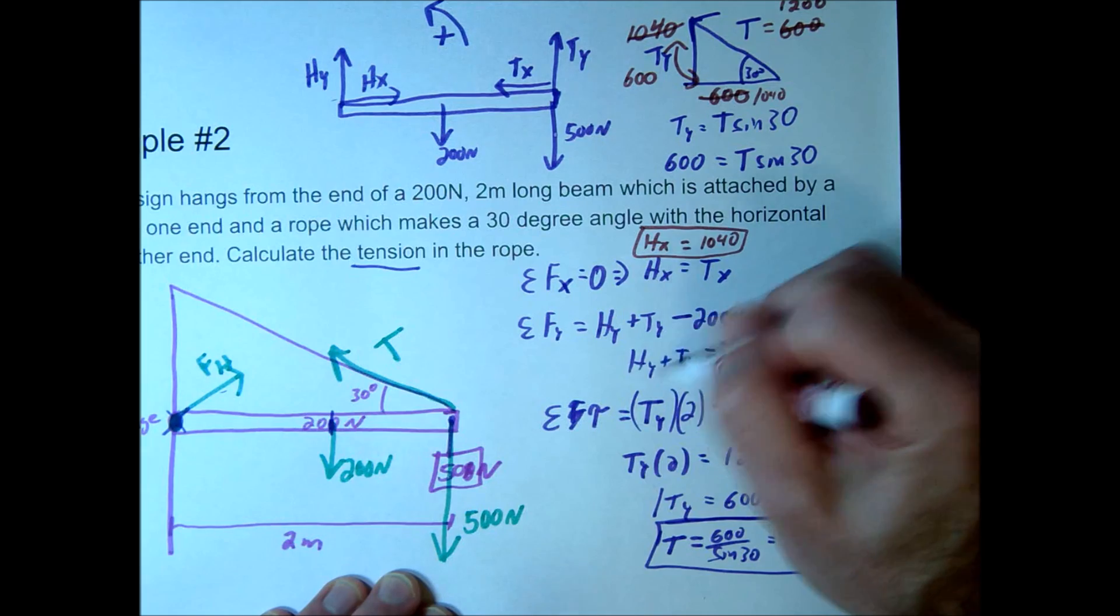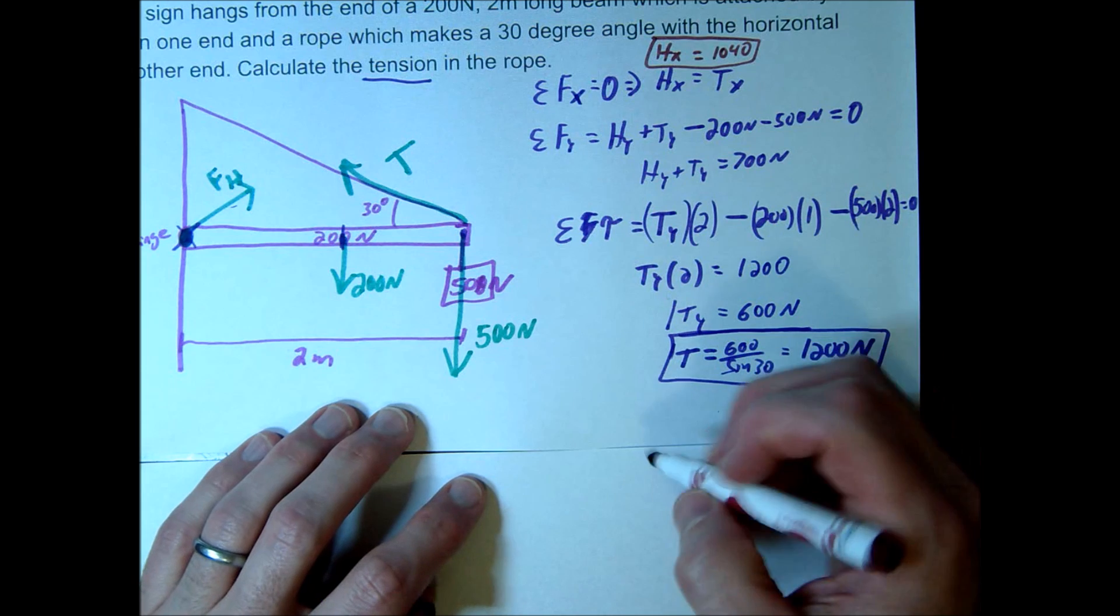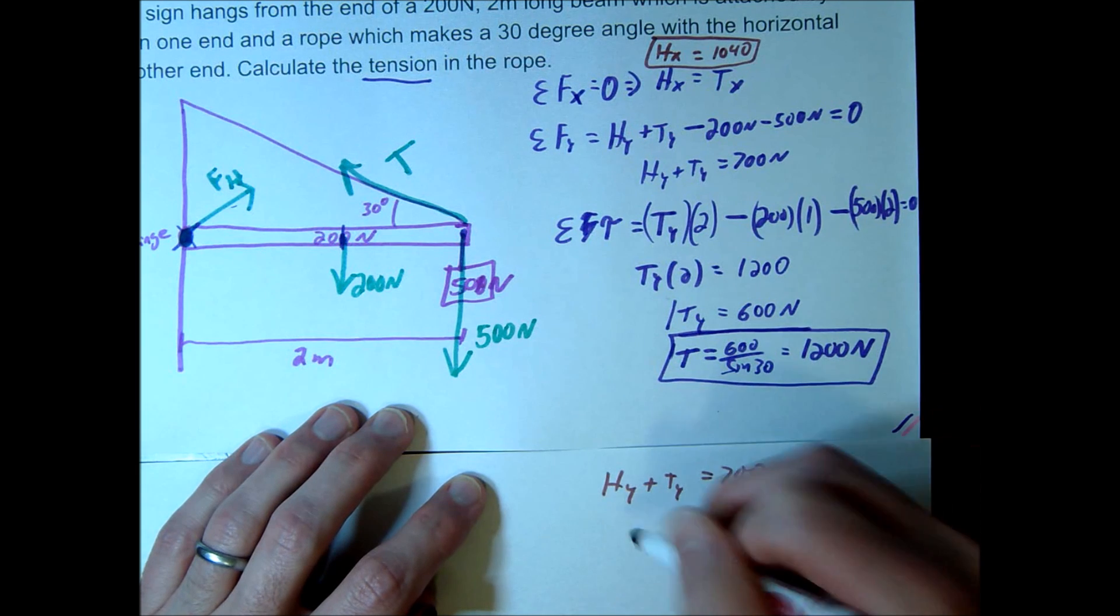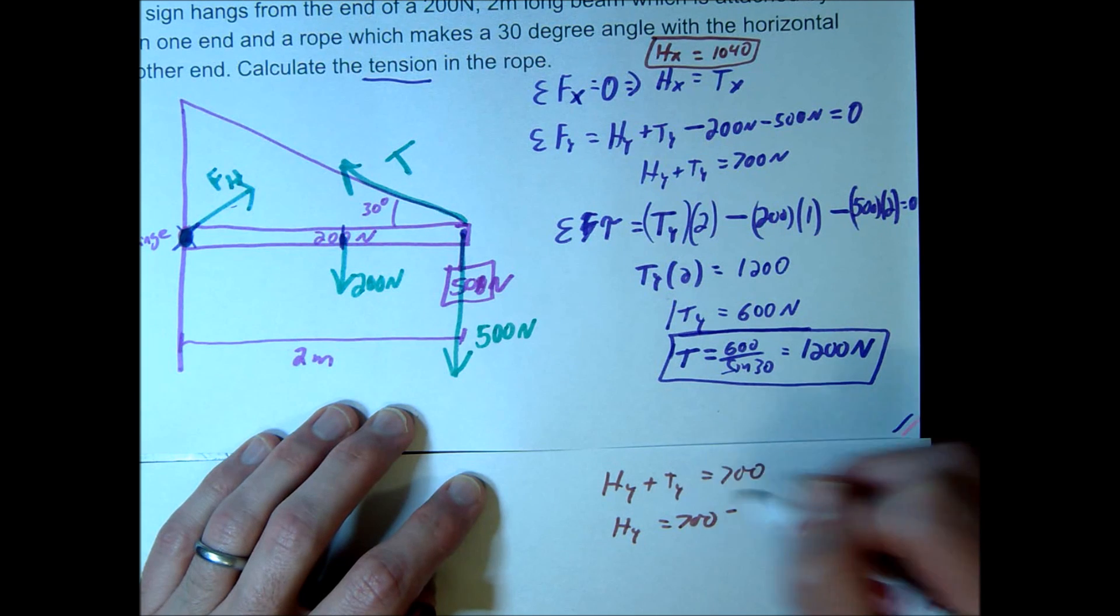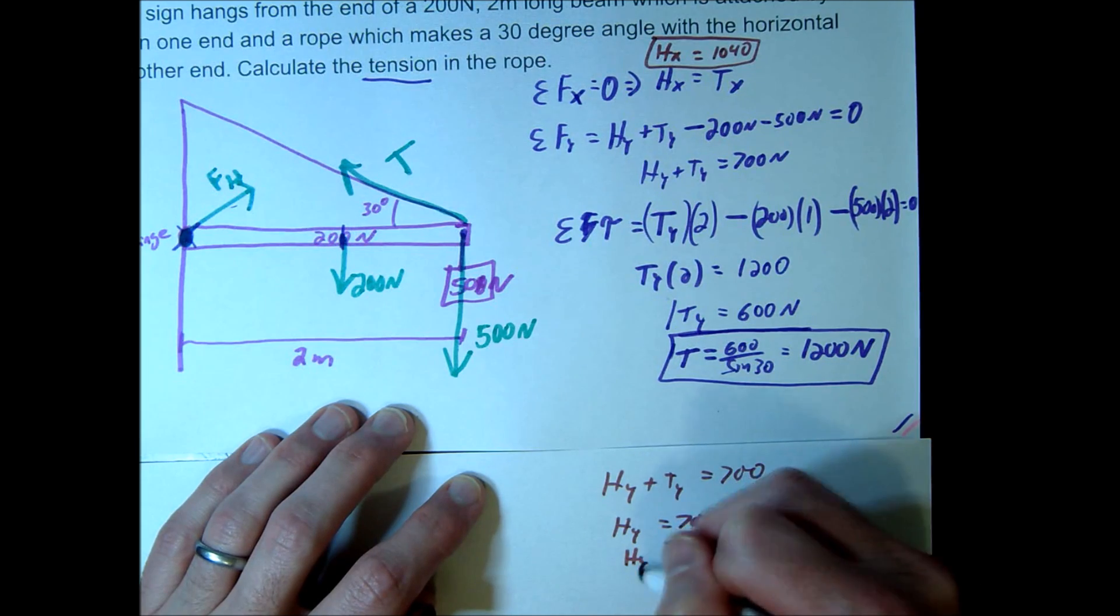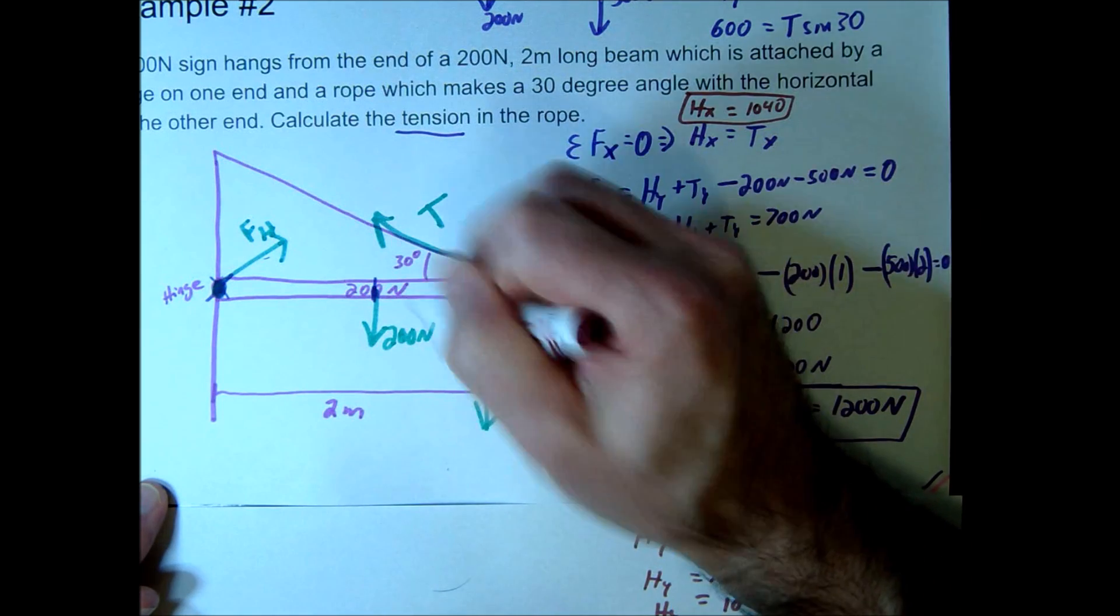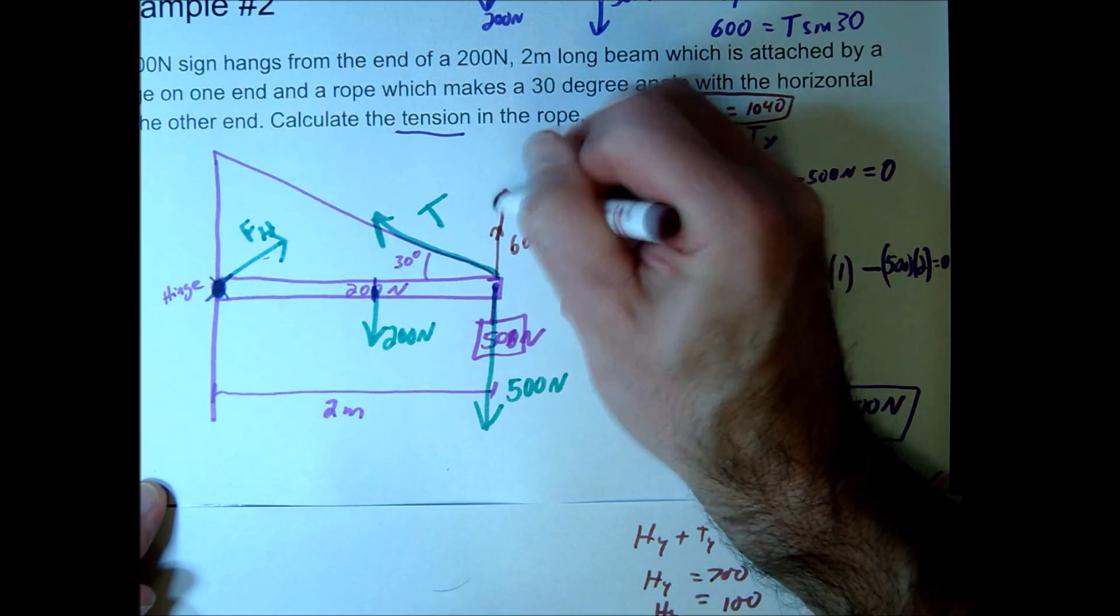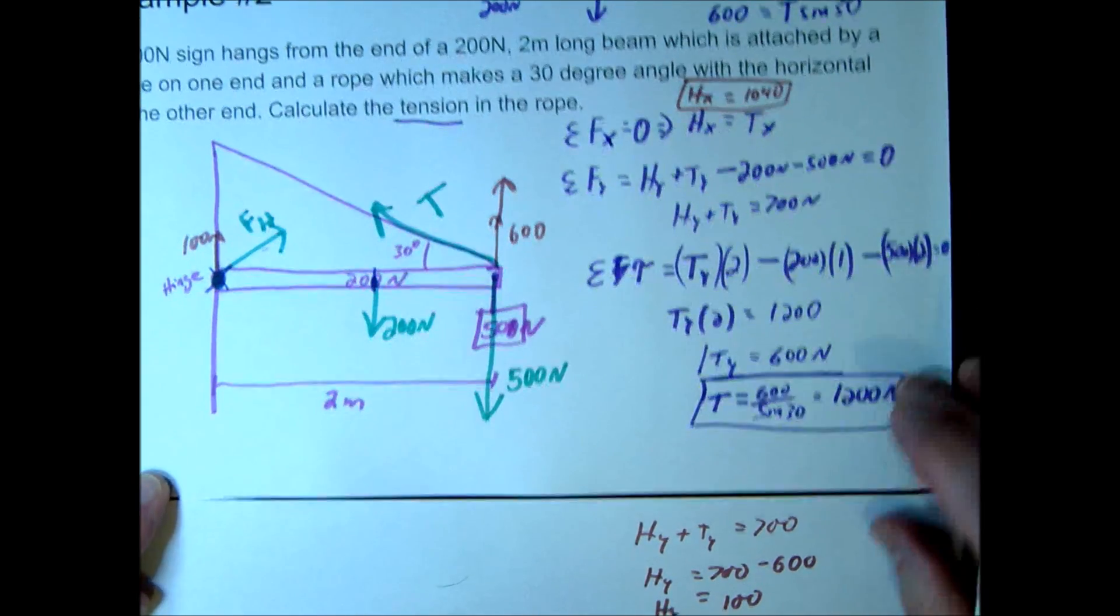We can also now solve for our hy here. Give myself a little bit of space. So we can say hy plus ty equals 700, hy equals 700 minus ty was 600, so hy must be 100. Okay, and hopefully that makes sense. In our picture we had 700 going down, we found ty was 600, so to balance that out we must have a 100 going up that way.